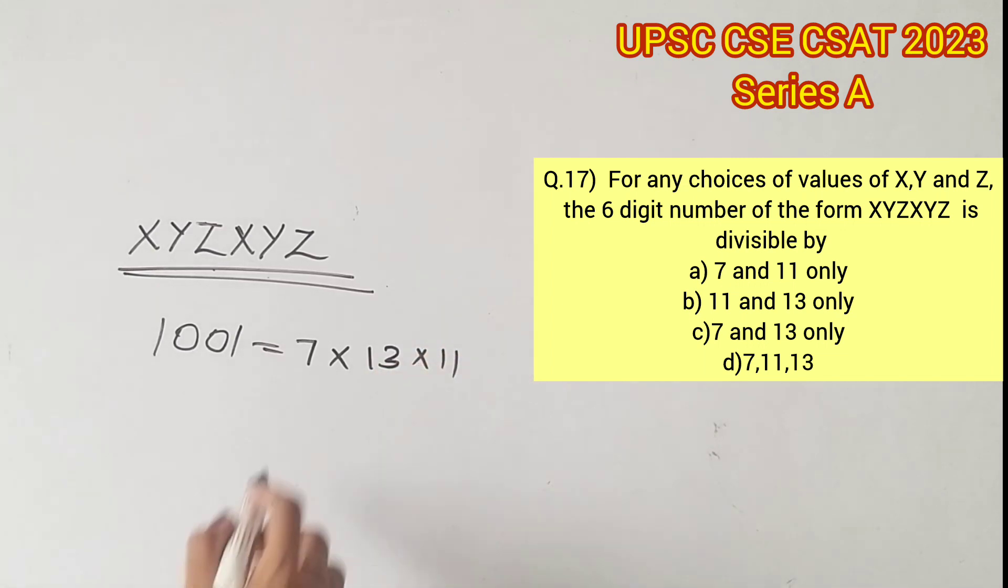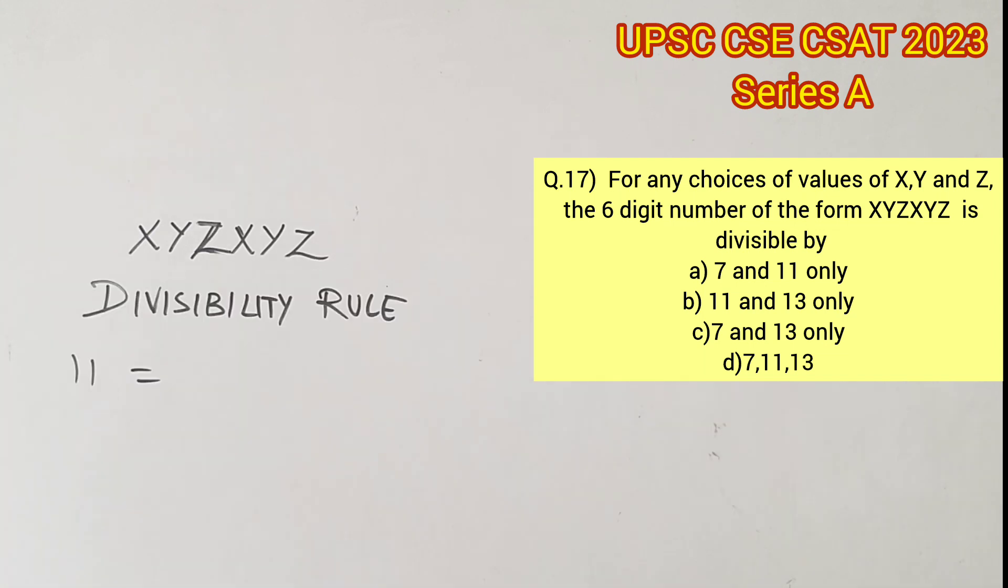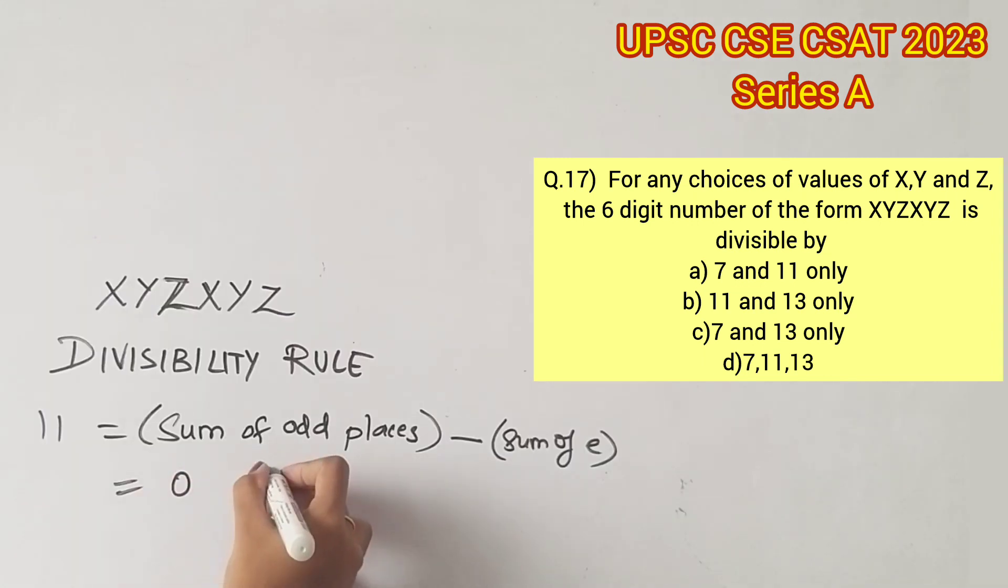But if you didn't know the proof earlier, we can arrive at the answer by checking with divisibility rules. First, let us check the divisibility rule for 11. We know that the divisibility rule of 11 is nothing but the sum of the digits in the odd places minus the sum of the digits in the even places should be equal to 0 or 11.